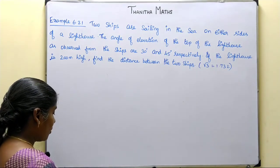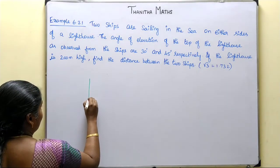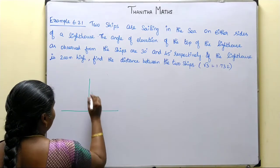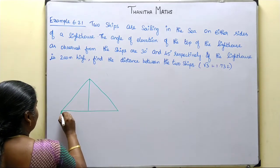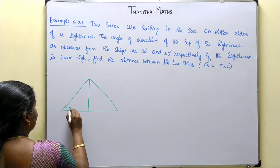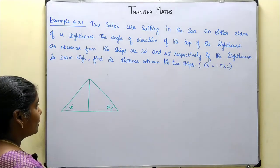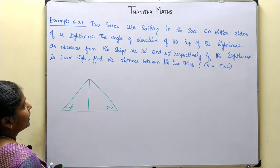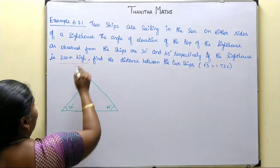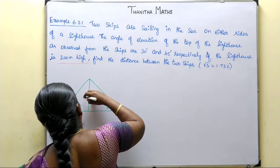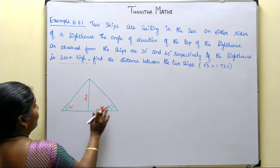There is a lighthouse with a ship on either side — A and B — and a lighthouse. There is a ship sailing on the left side and the right side. The angle of elevation is 30 degrees on one side and 45 degrees on the other. The lighthouse height is 200m.